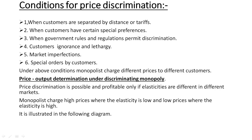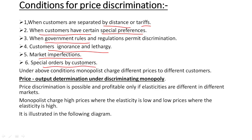The conditions that lead to price discrimination include: when customers are separated by distance or tariffs; when customers have certain special preferences; when government rules and regulations permit discrimination; when customers' ignorance and lethargy can be taken advantage of by the monopolist; market imperfections; and special orders by customers. Under all these conditions, the monopolist charges different prices to different customers.